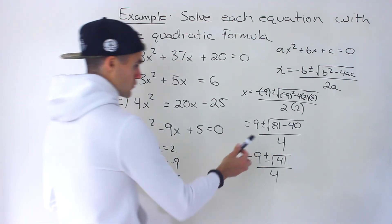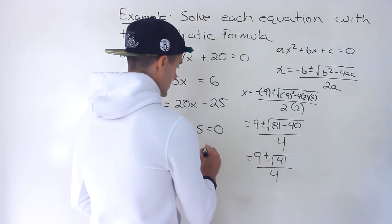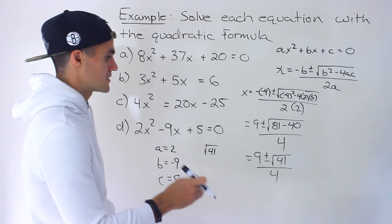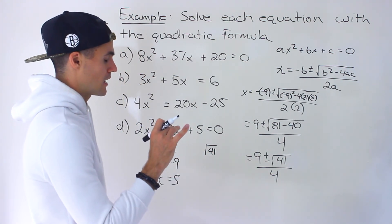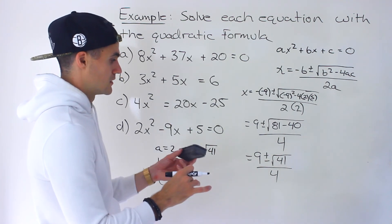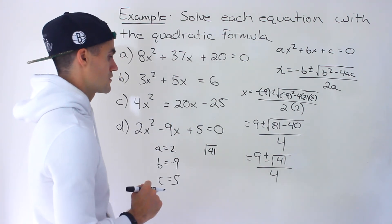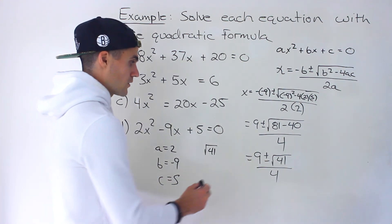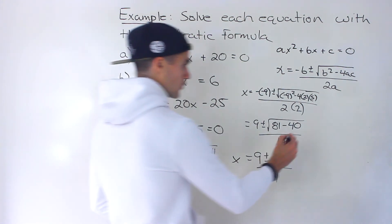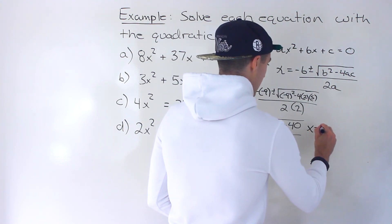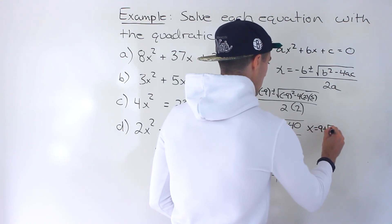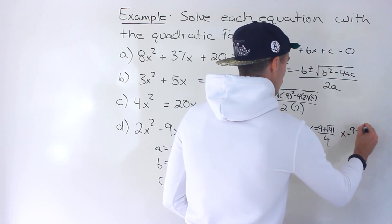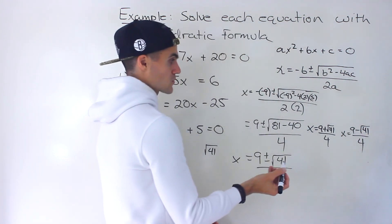Root 41 doesn't simplify any further because we can't divide 41 by a perfect square — not 4, not 9, not 16, not 25, not 36, and 49 is already above it. So that is the final form. The two solutions are x equals 9 plus root 41 over 4, or x equals 9 minus root 41 over 4.